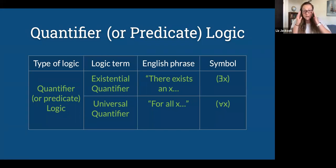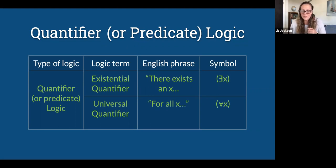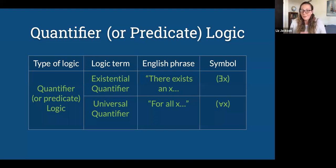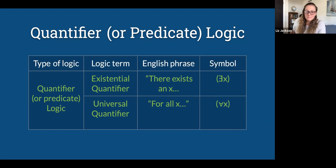In quantifier logic, there are two main operators: the existential quantifier (a backwards E, ∃) and the universal quantifier (an upside-down A, ∀). The backwards E basically means 'there exists something.' The upside-down A talks about a whole group and says the whole group is a certain way. So you might say ∃x such that x is a cat, or you might say ∀x: if x is a cat, then x is an animal — meaning all cats are animals.